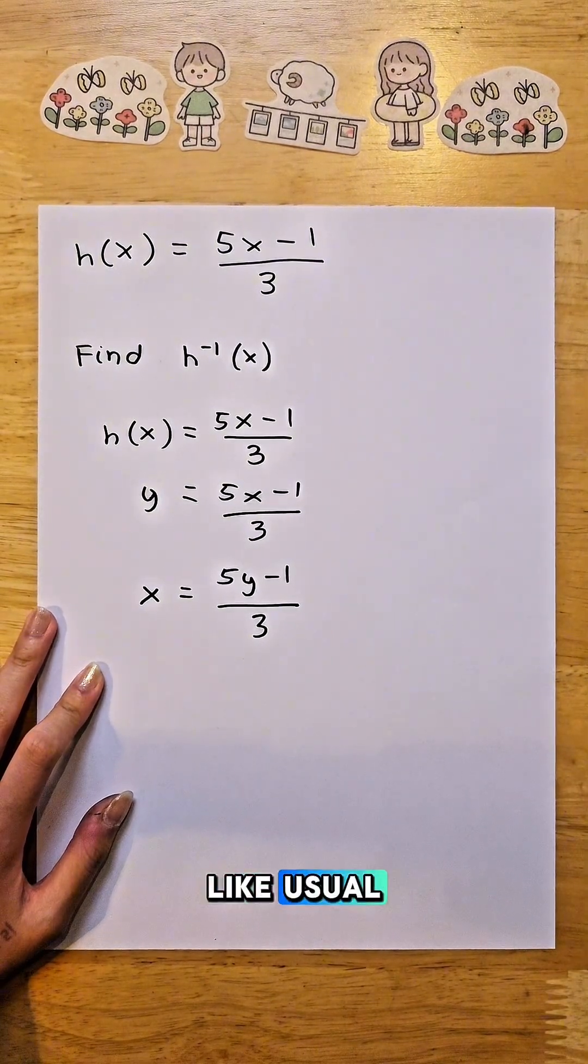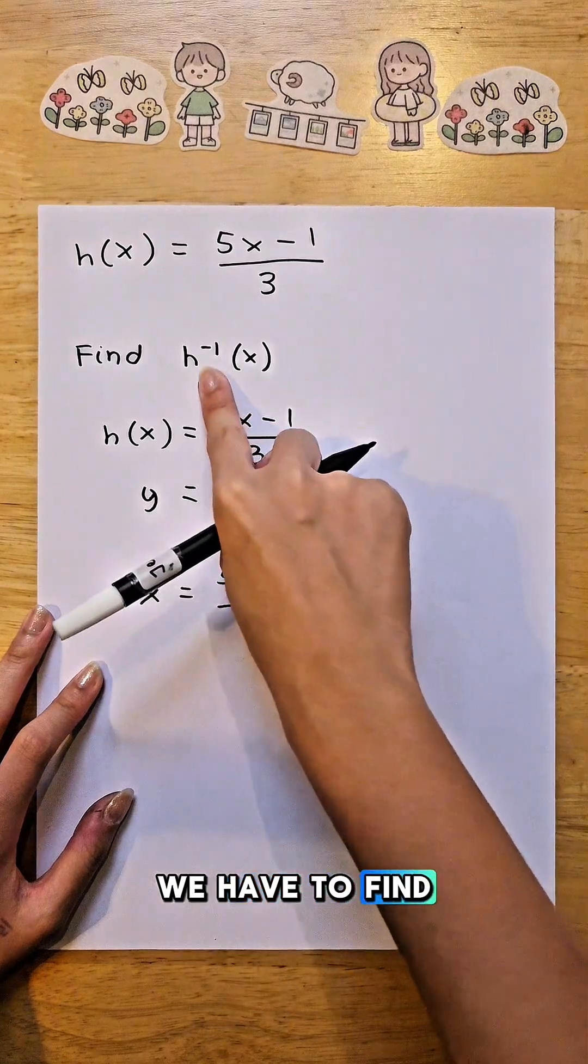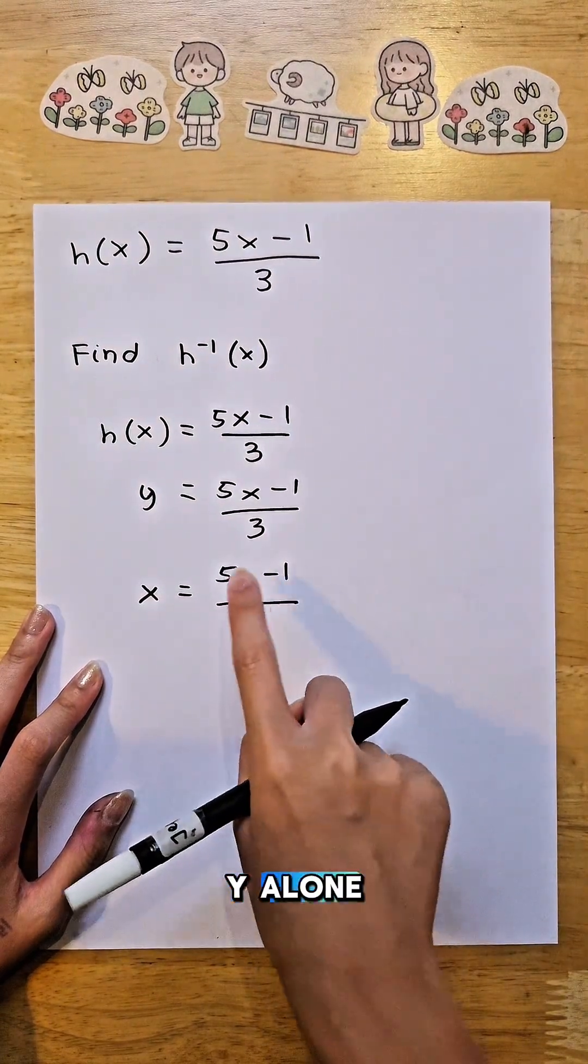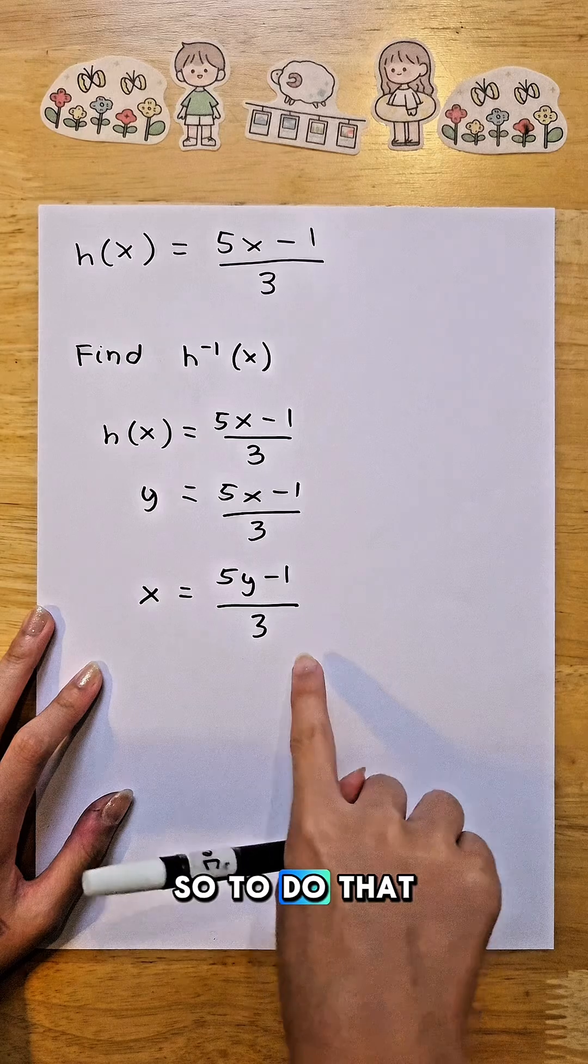Now just solve it like usual. To find this, we have to make y alone and we have to find y. So to do that,